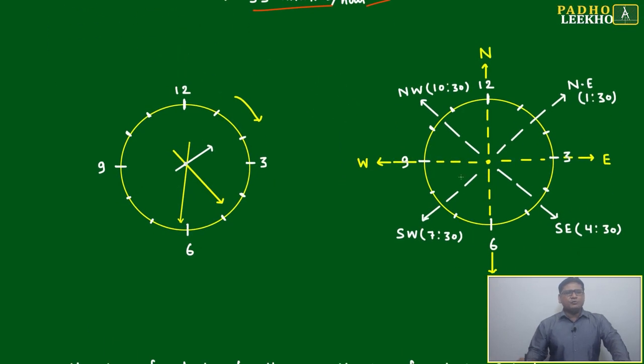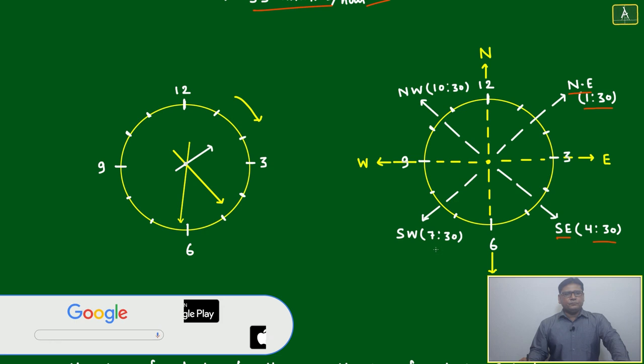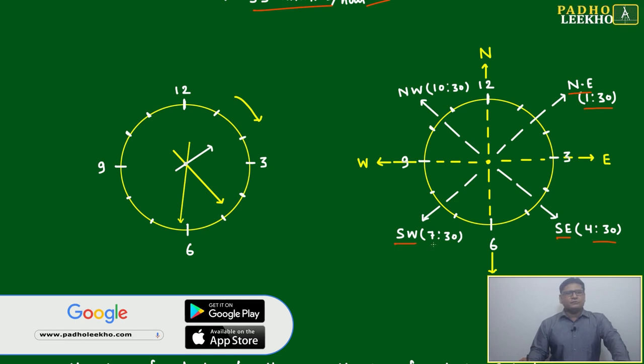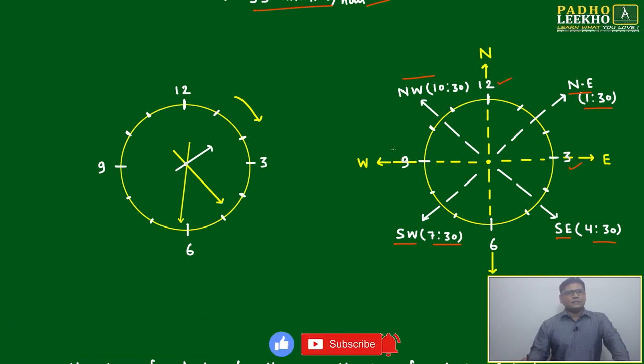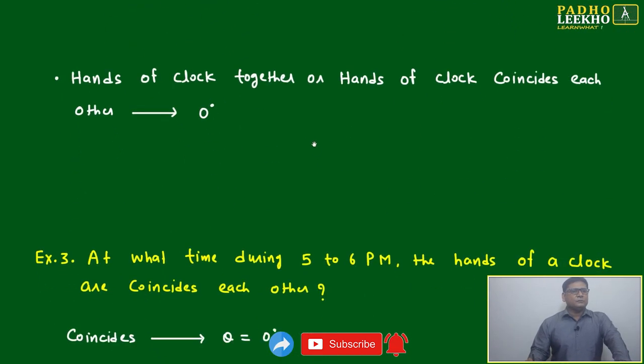Sometimes it will be given based on different directions. Northeast will be 1:30, southeast 4:30 AM or PM, southwest 7:30, and northwest 10:30. Exactly east is 3, exactly north is 12, exactly west is 9, and exactly south is 6. Just try to keep this in mind.